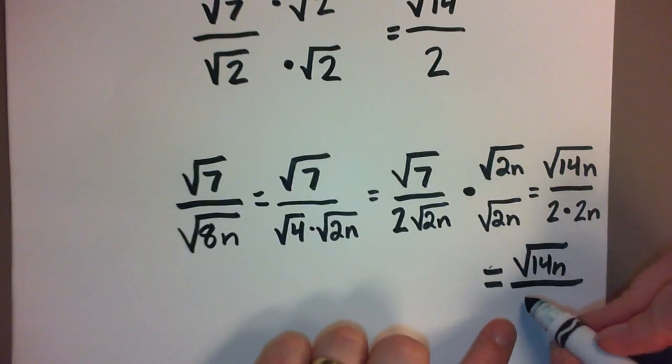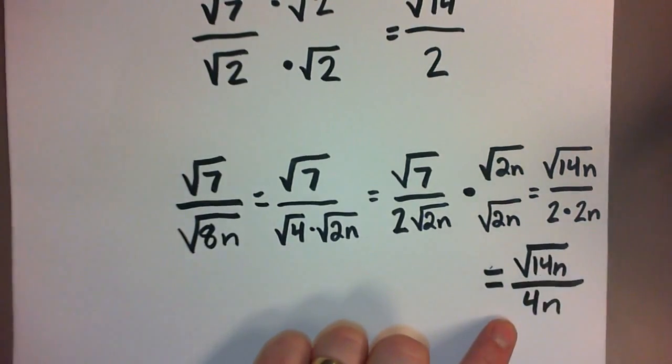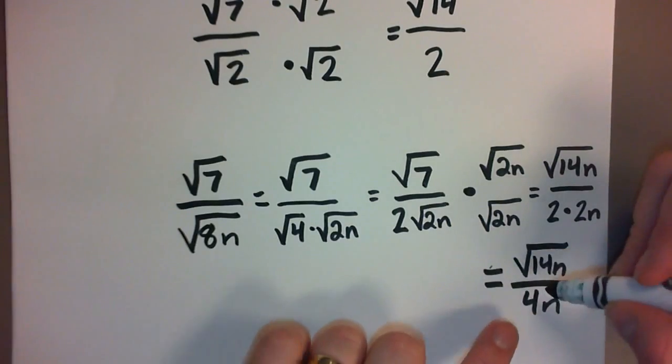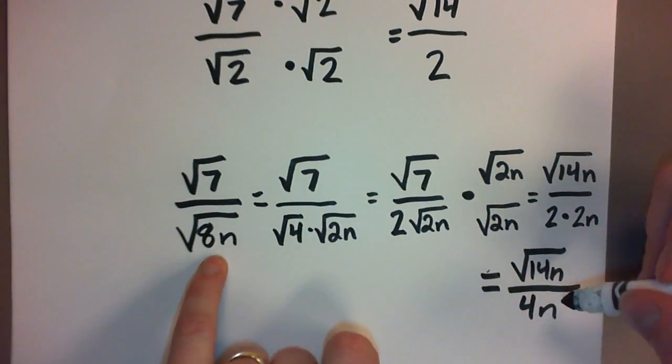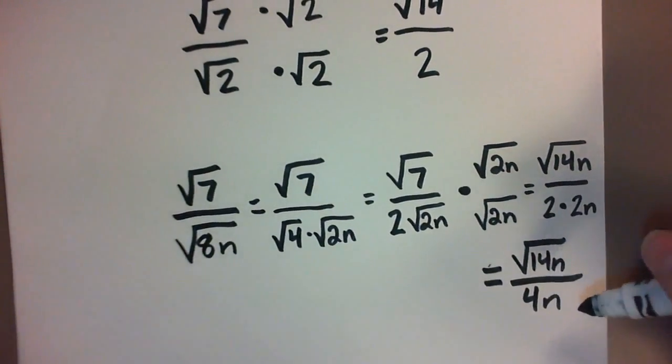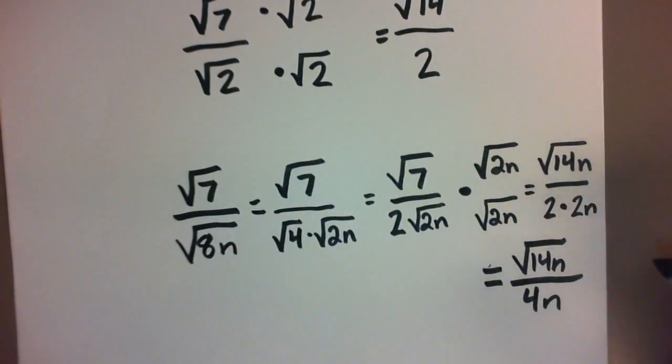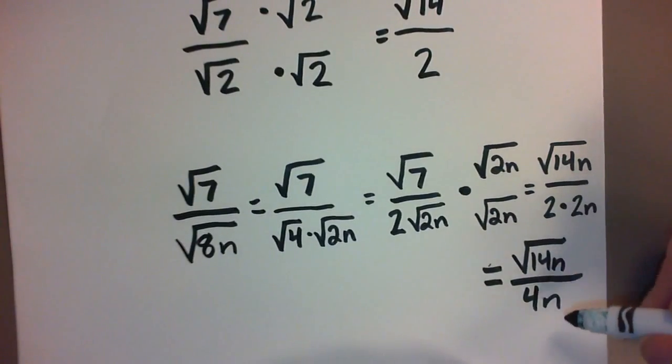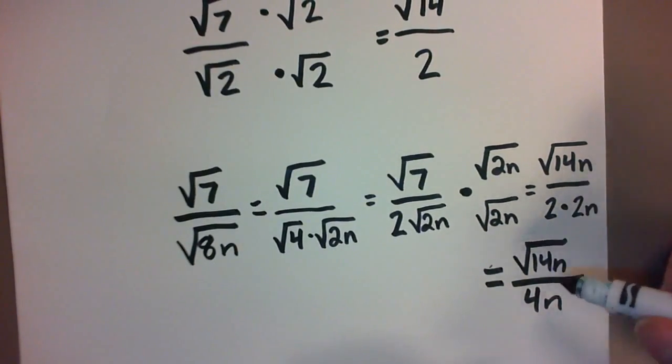And then there's one last step for us to do, and that's to multiply the 2 times 2n on the bottom. So 14n under the radical on top and 4n on the bottom. And now this expression over here has a rational denominator. We didn't change the size of this fraction, we just changed how we wrote it. It's just like reducing fractions and writing equivalent fractions.